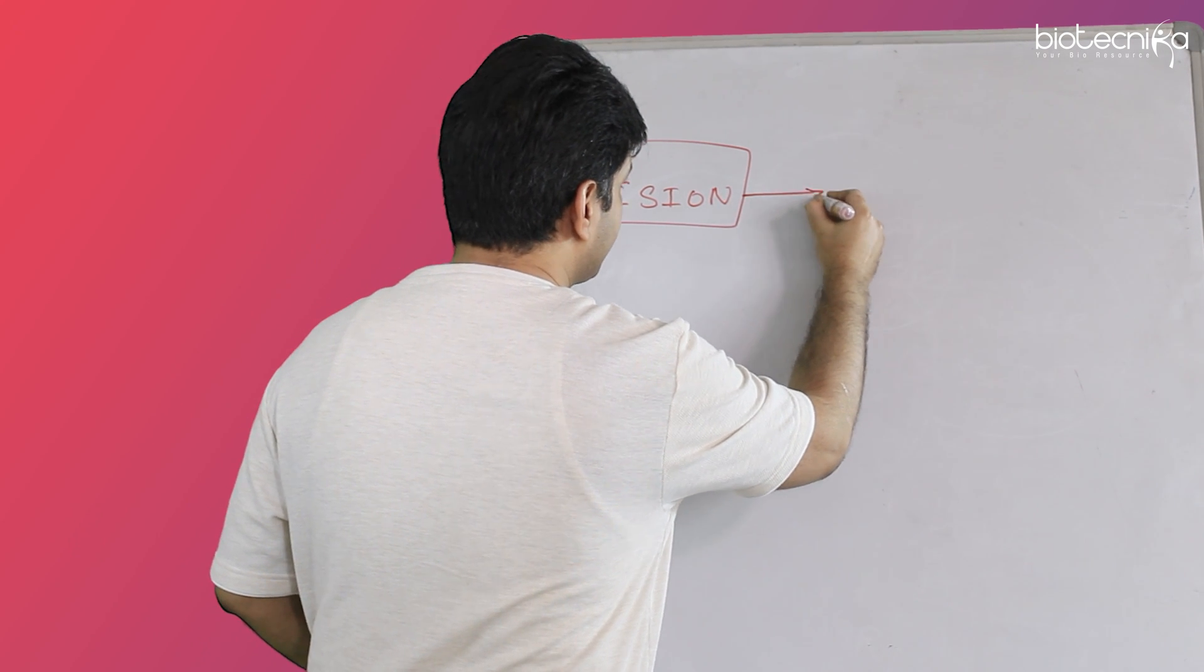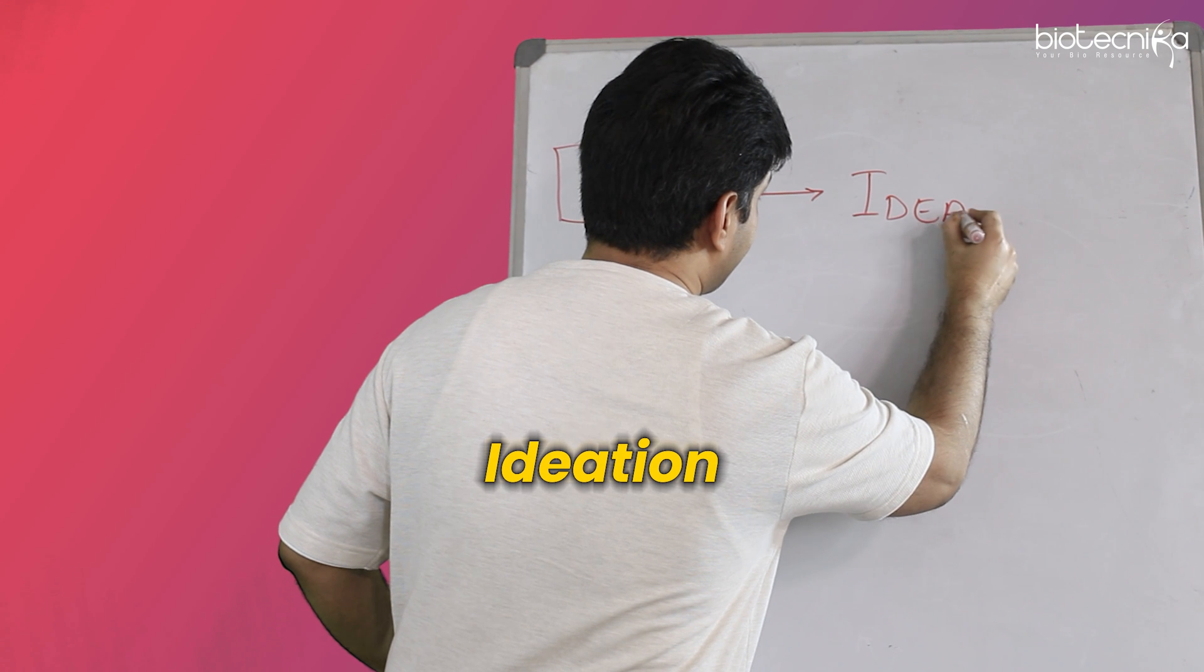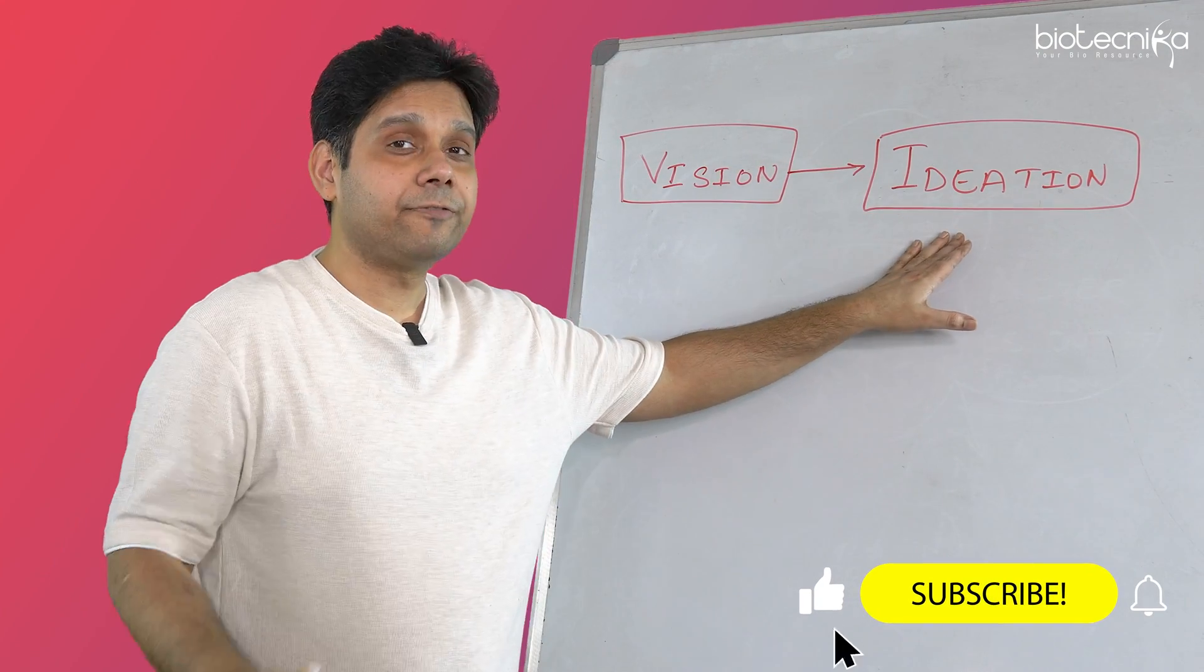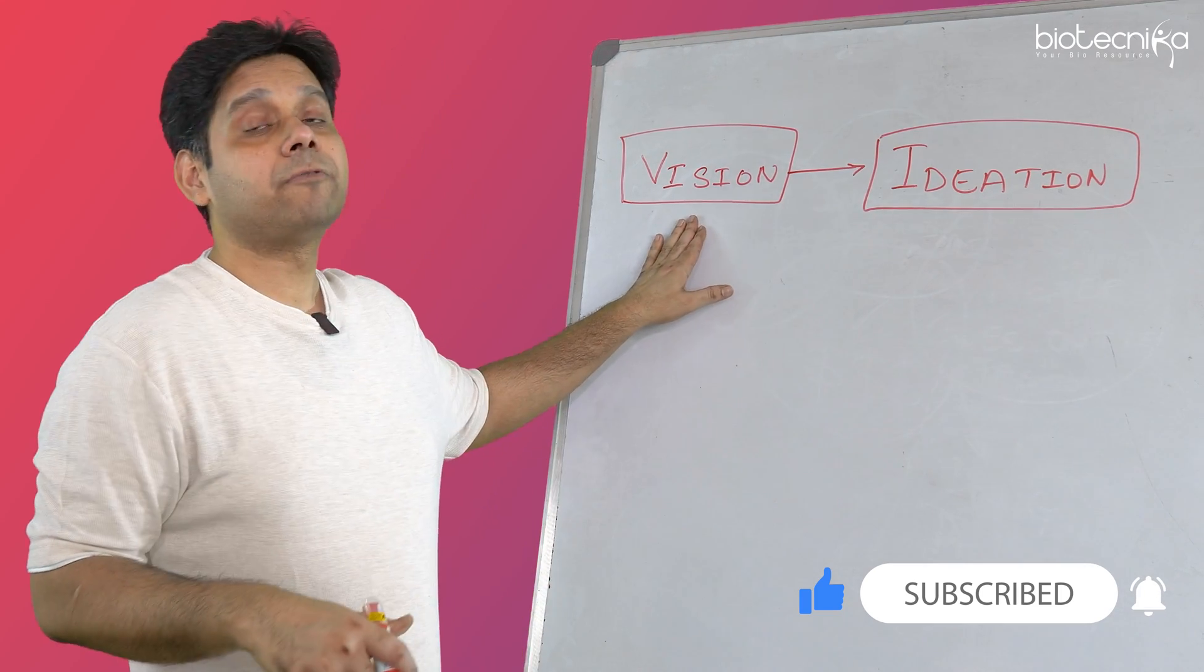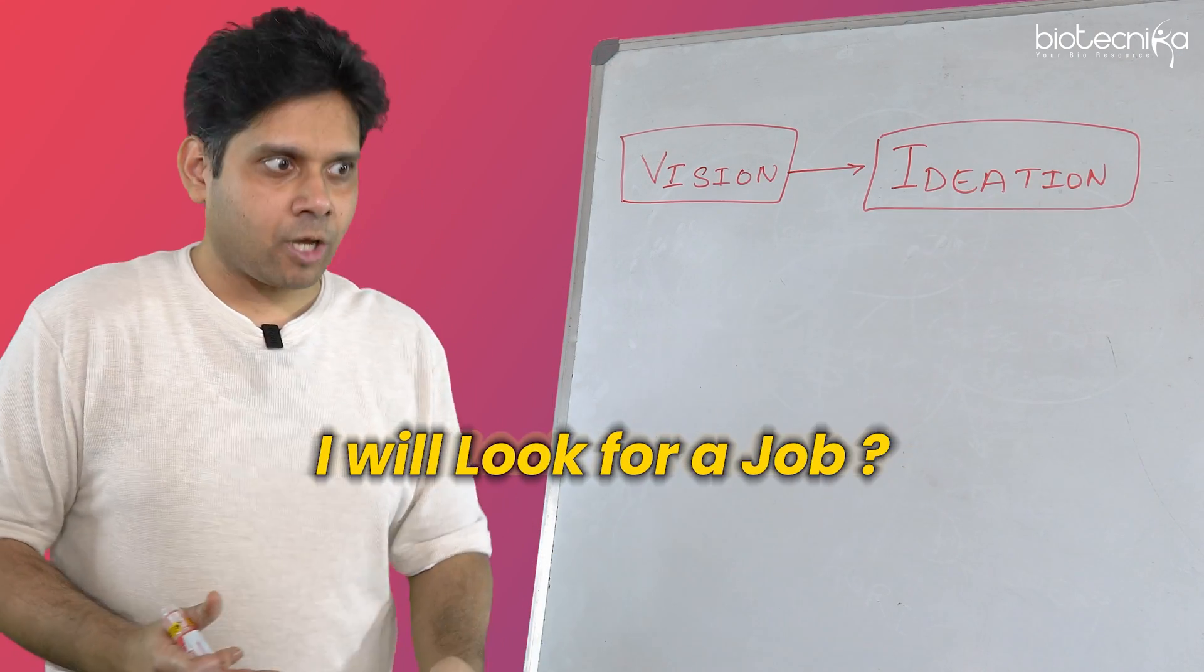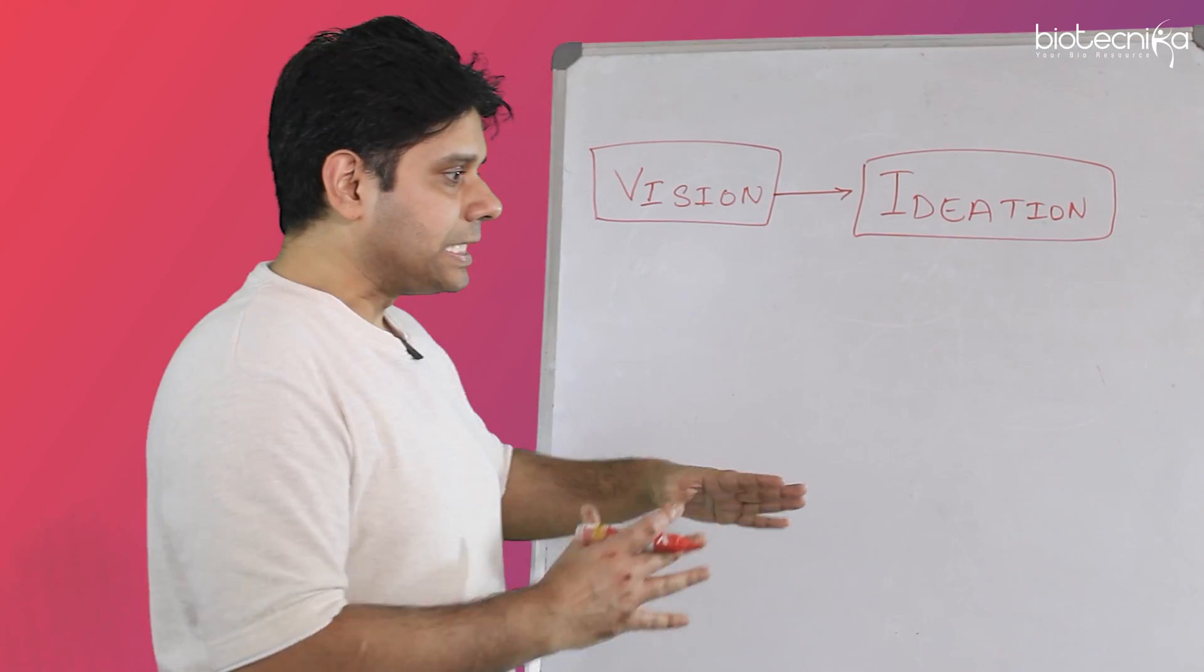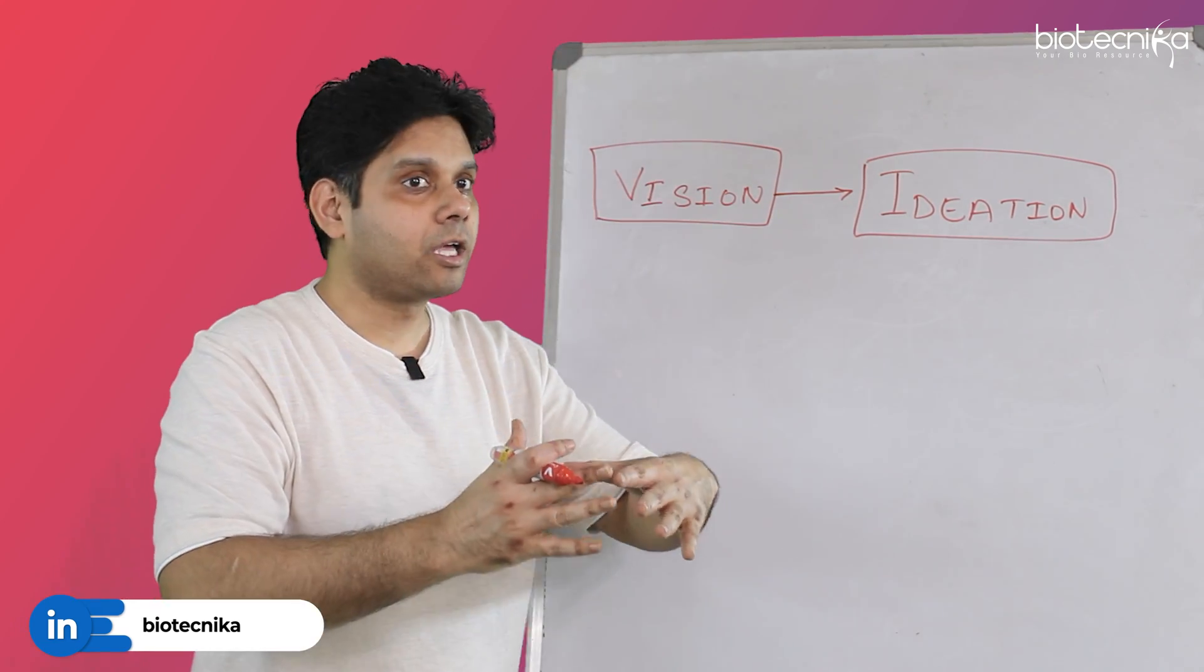If we know what is our vision, then we need to have some ideas. Ideation, that we call it as ideation. So, what is the idea? What are the different ideas which I have to implement so that I can achieve my vision? That ideation can be, maybe I will start a biotech company. Maybe I will look for a job. Maybe I will go for CSIR NET. Maybe I will go for PhD. Maybe I will go abroad and do my PhD. Maybe I will go for a job abroad. So, these are the ideas.